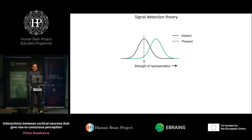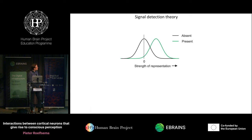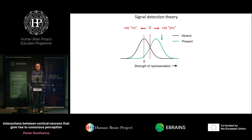Our results were well described by signal detection theory, which proposes that when you present a weak stimulus, you get across trials a distribution of internal signal strength. If there's no stimulus, there is another distribution shifted to the left, because on average the internal signal strength is lower. On a specific trial, you sample from this distribution and may get a given internal signal strength. In signal detection theory there's a threshold — if the internal signal is stronger than the threshold, you say 'yes, I saw it,' which is called a hit.